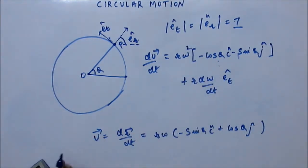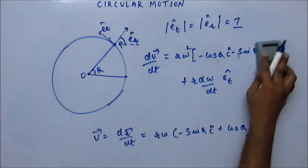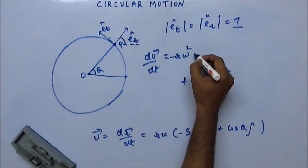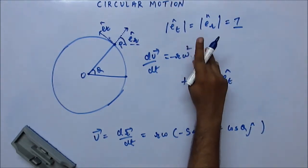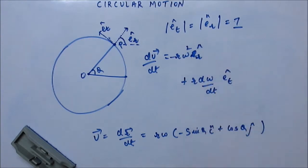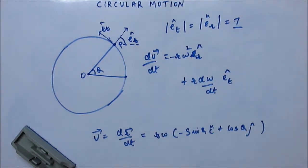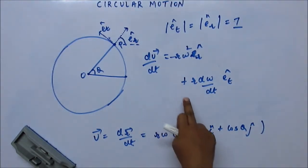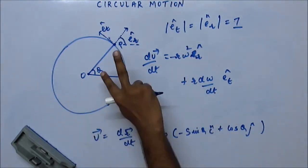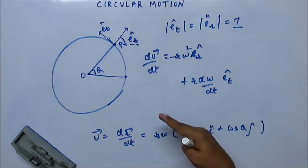There will be one omega here. So we can replace this as minus E R cap. Now you can see the acceleration has two parts — one is along the radial vector and the other is along the tangential vector.